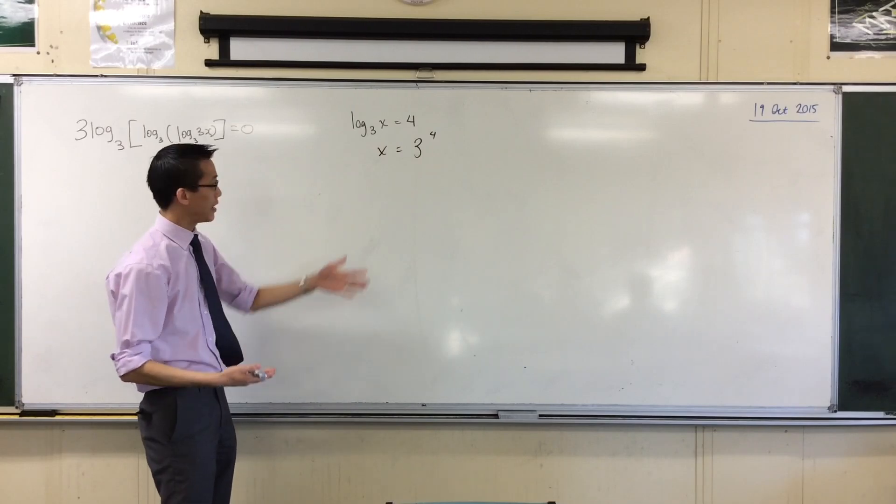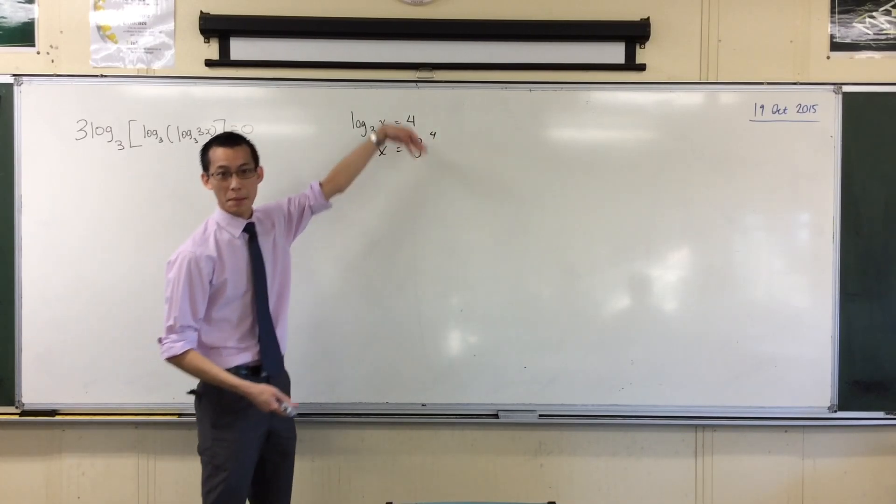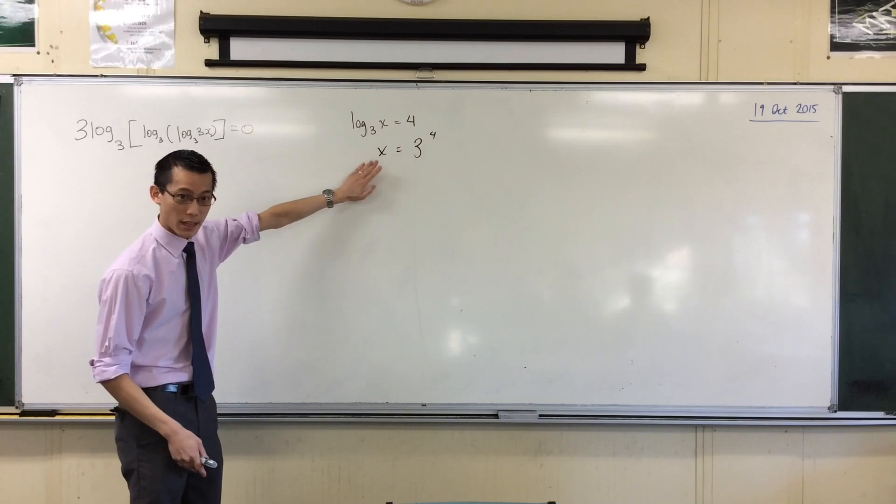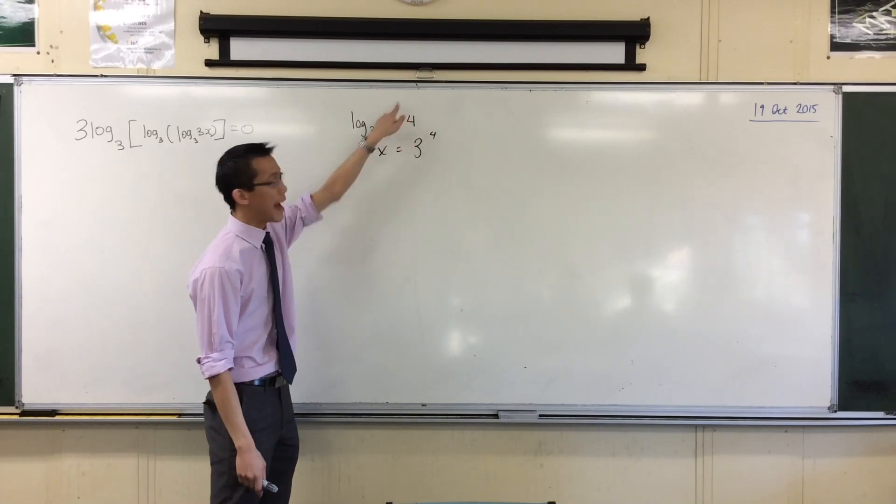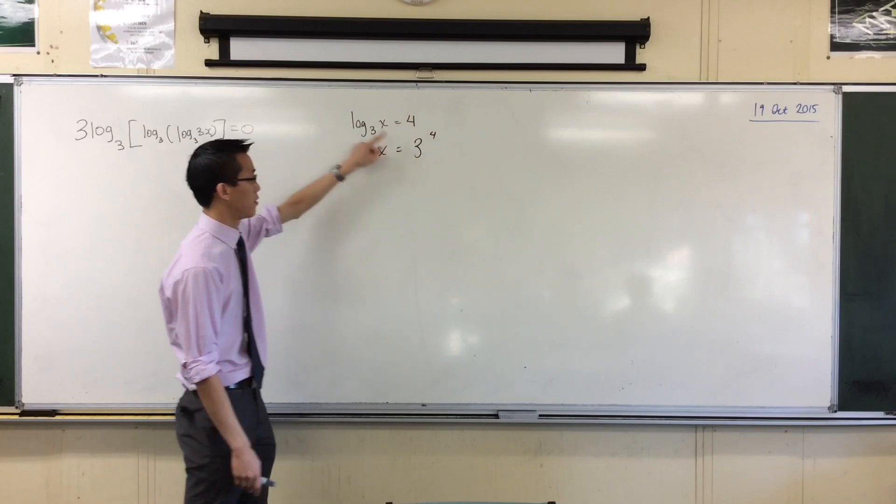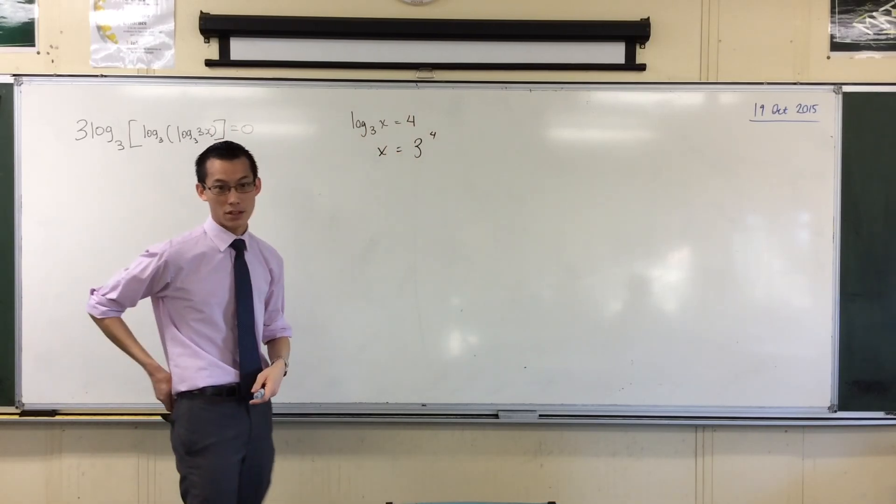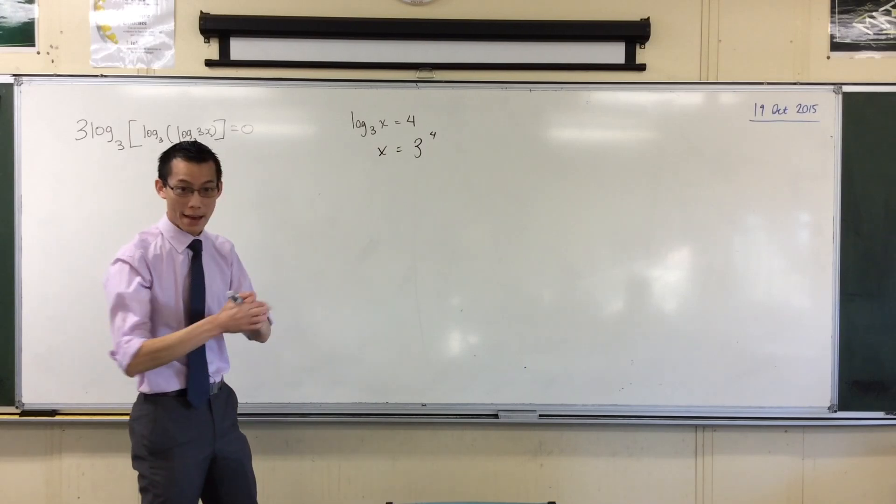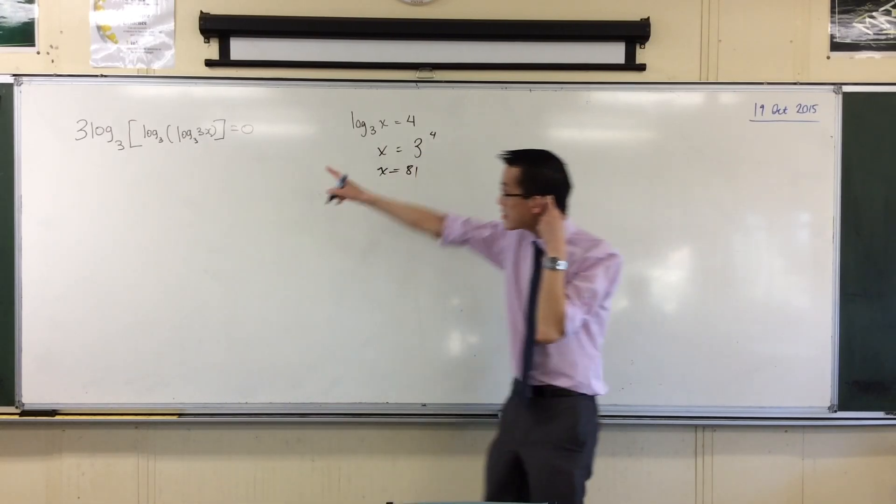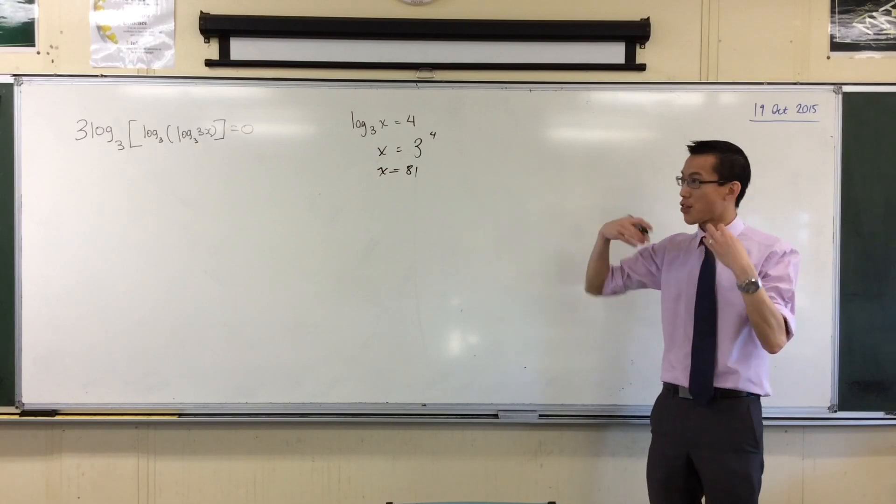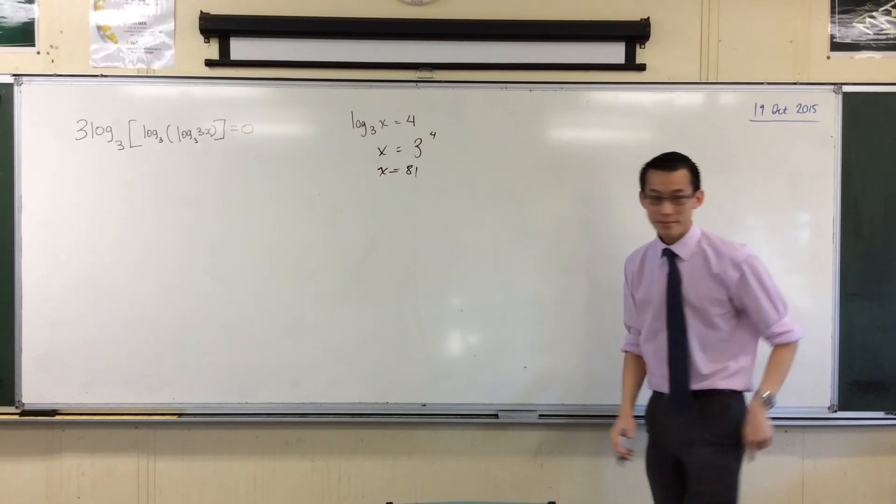Instead of making the value of the whole thing, like 3 to the power of whatever, instead of making that the subject, what's the subject in this case? The power is the subject, rather than what's the base raised to the power. Now in this case, 3 to the 4, that's just 81. So you've got an answer, happy time. Now if I understand that, then this question is just 3 lots of this question.